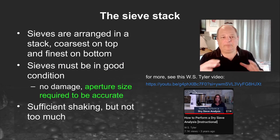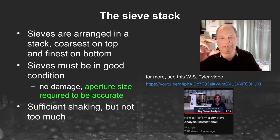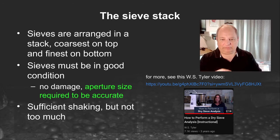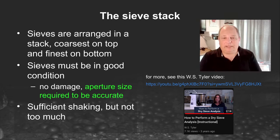The sieves are arranged in a stack with the coarsest opening size at the top and the finest at the bottom, with a progression of progressively finer sieve openings as you move down the stack. At the very bottom you'll have a pan that collects all the material that passes the finest sieve size.